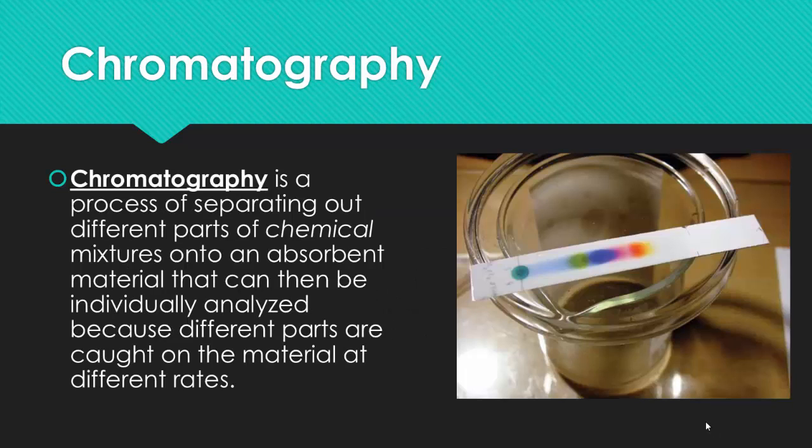Chromatography is a process of separating out different parts of a chemical mixture onto absorbent material that can then be individually analyzed because different parts are caught on the material at different rates. What you're doing is looking for their speed of rising on this paper. You'll notice in the picture there's many different colors from that one original spot all the way to the left. Those different colors and different spots that you see are just different chemical mixtures that make up that one original homogeneous mixture.